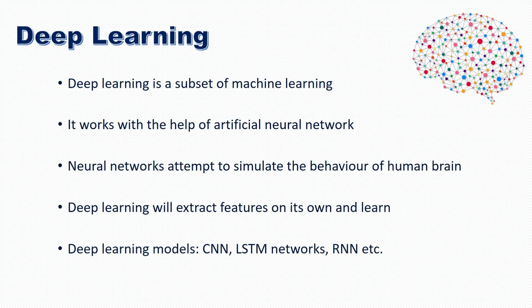Deep learning is a subset of machine learning. Mostly we will be using images in deep learning. It works with the help of an artificial neural network. These neural networks attempt to simulate the behavior of the human brain. Deep learning will extract features on its own and learn. We won't be giving features like we did in machine learning — here we give images, and deep learning learns on its own by extracting features on its own.